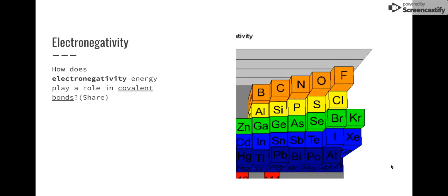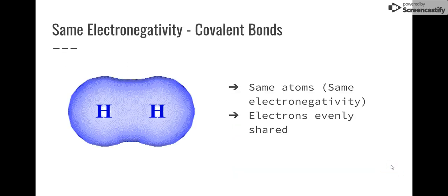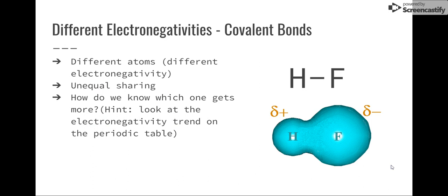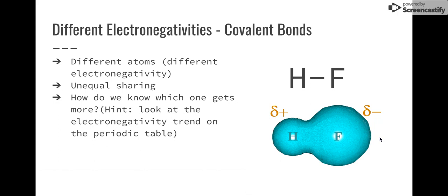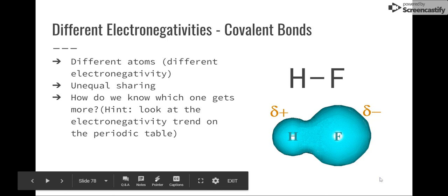How about covalent bonds? Covalent bonds are a little bit more complicated. So how does electronegativity play a role in covalent bonds? Well, some covalent bonds are two elements that have the same electronegativity. The electrons are evenly shared between the two. Other types of covalent bonds don't have the same attraction to electrons. So there are different atoms, like for example here, hydrogen and fluorine, and they have an unequal sharing that's represented by this cloud. Notice the cloud's a little bit bigger over here. So how do we know which one gets more of those electrons? Well, we just look at the trend on the periodic table. Fluorine is more to the right than hydrogen is. Therefore, it has a stronger attraction to those electrons.